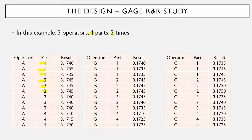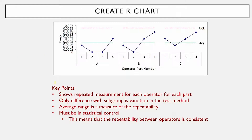We're going to take this data and show what the output from the basic EMP study is. You start by creating a range chart. The key point is that the range chart shows the repeated measurements for each operator for each part. For example, for operator A, here's part one — he measured it three times and this is the range on those three measurements. Since it's the same operator and same part, the only difference in that range is the variation in the test method. Each of these ranges is an estimate of the variation in the test method.